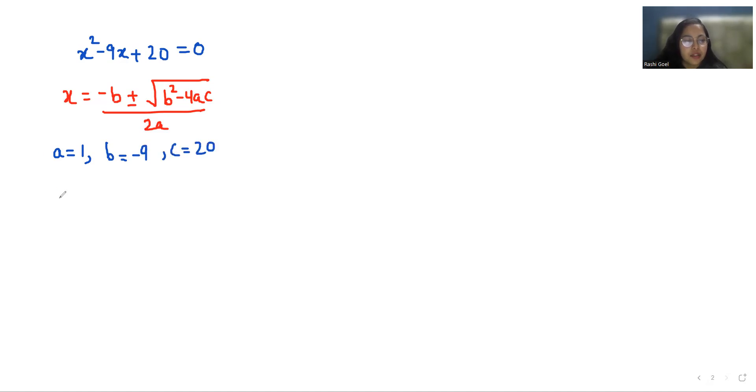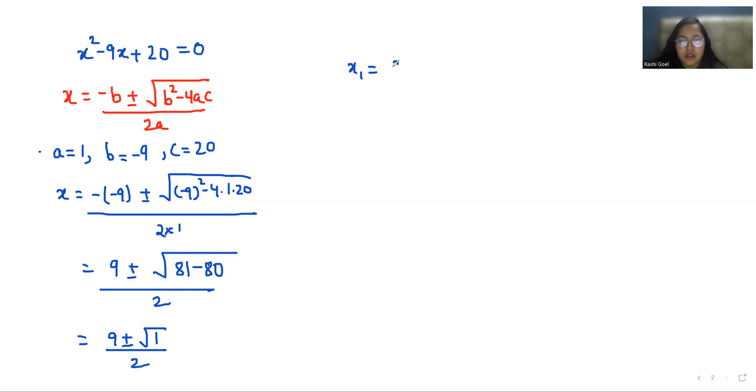So x equals minus negative 9 plus minus under root negative 9 square minus 4 times 1 times 20, all by 2 times 1. So 9 plus minus under root 81 minus 80, by 2. So 9 plus minus square root of 1 by 2, and square root of 1 equals 1. So 9 plus minus 1 by 2.